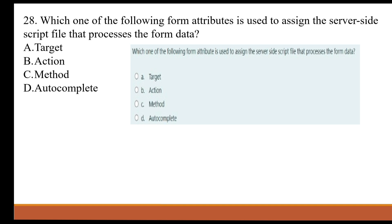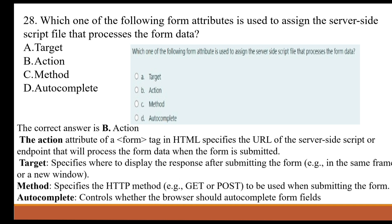The correct answer is B, Action. The action attribute of a form tag in HTML specifies the URL of the server-side script or endpoint that will process the form data when the form is submitted. Target specifies where to display the response after submitting the form, such as the same frame or a new window. Method specifies the HTTP method — for example, GET or POST — to be used when submitting the form. Autocomplete controls whether the browser should autocomplete the form fields.